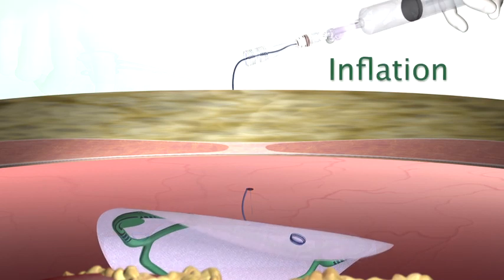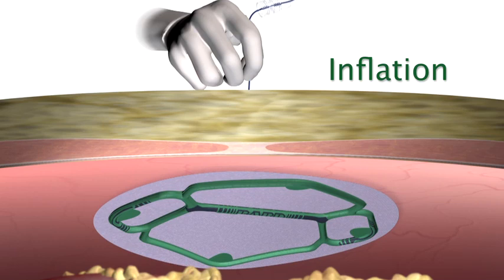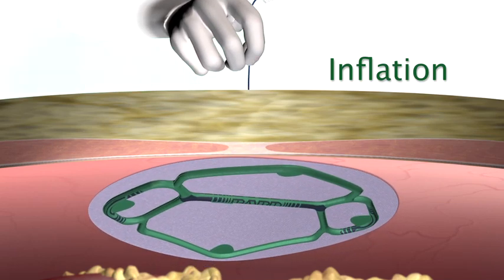The ECHO-PS Positioning System is inflated using the pre-packaged inflation assembly. Inflation facilitates unrolling, opening, and positioning of the mesh.